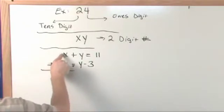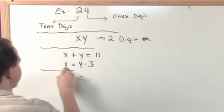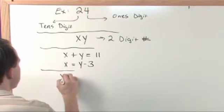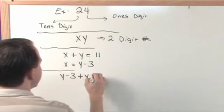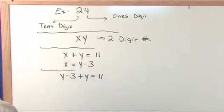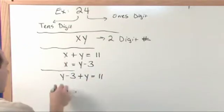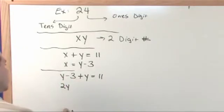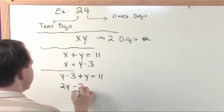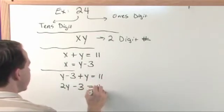So let's solve. Let's plug in x in here. We'll plug this in. We'll say y minus three, which is plugging into here, plus y is equal to eleven. We just plug in into that equation there. Y plus y gives you two y. We'll just keep our minus three is equal to eleven.